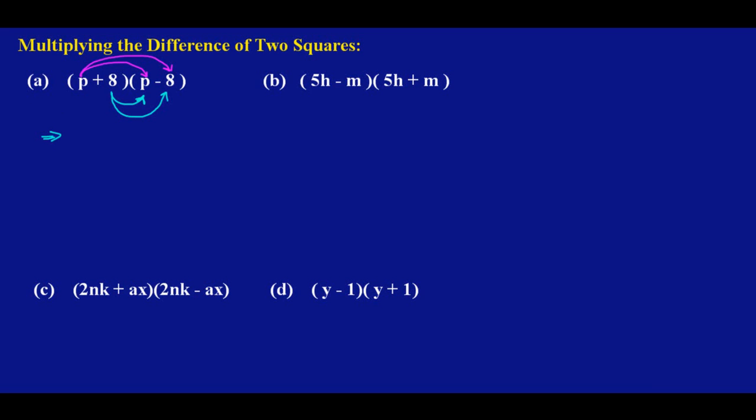So let's see what we get. This is saying p times p will give me p squared, so I'll have p squared, and p times negative 8 will give me negative 8p, and I've used p to multiply these two terms here.